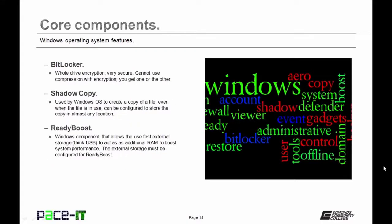BitLocker is available in some versions and allows for whole drive encryption. Note: you can either compress your files or encrypt your drive, but you can't do both. Microsoft also introduced Shadow Copy, which creates a copy of a file even when it's in use and can be stored in almost any location — a great way to roll back what you're working on. ReadyBoost uses fast external storage, usually USB drives, as additional RAM to boost system performance; the external storage must be configured to be ReadyBoost ready.